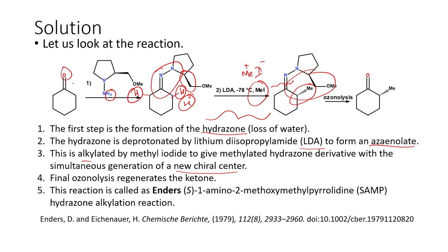Ozonolysis of the hydrazone derivative leads back to the carbonyl compound. In other words, we started with a carbonyl compound and end up with the same carbonyl compound — the only change is the introduction of the methyl group. This reaction is very similar to Stork enamine alkylation reactions, where an enamine is formed and alkylated by an alkyl halide. This version developed by Enders is an asymmetric version giving high enantioselectivity.